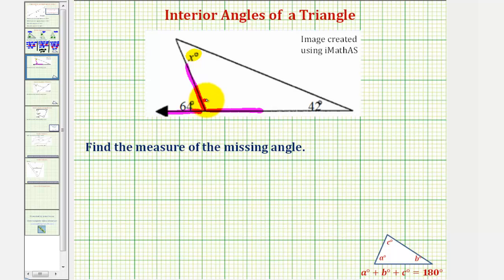So to find the measure of this angle here, we can either set up an equation or just recognize that the measure of the angle would be 180 degrees minus the exterior angle of 64 degrees, giving us a measure of the interior angle of 116 degrees.